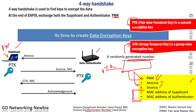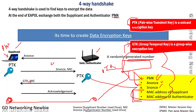After this, both parties have the encryption keys, have authenticated each other, and the supplicant can now use the internet services through the access point. Many steps are required for authentication and generating the encryption keys. I hope this discussion was useful, and hope to see you in another video. Thank you.